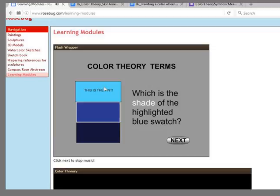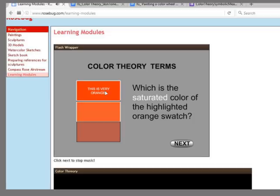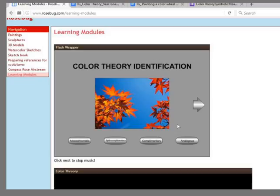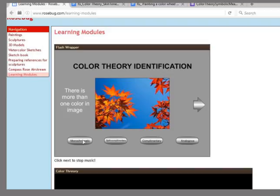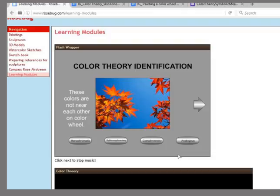If a viewer chooses to, they can click through the presentation. They are not stopped from proceeding. The first three slides ask the viewer to choose specific color relationships. The auditory rewards and explanatory responses continue in this section and the next.